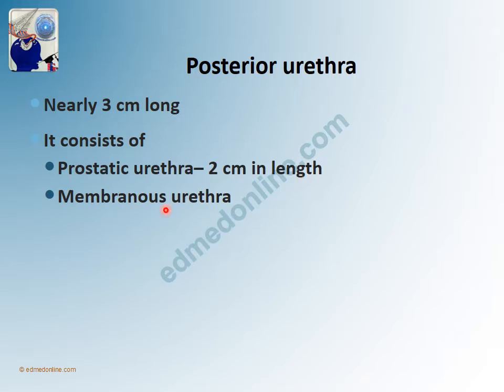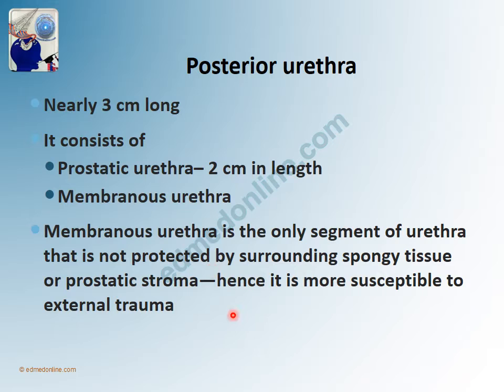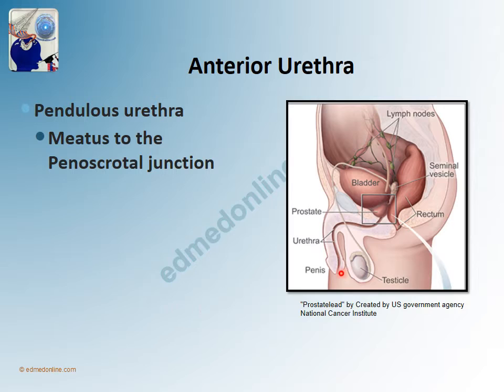The posterior urethra is nearly 3 centimeters long and consists of the prostatic urethra, which is 2 centimeters in length, and the membranous urethra, which is about 1 centimeter in length. The most important thing to remember is that the membranous urethra is the only segment of the urethra which is not protected by the spongy tissue or the prostatic stroma, and hence when there is trauma, it is the area most susceptible to injury.